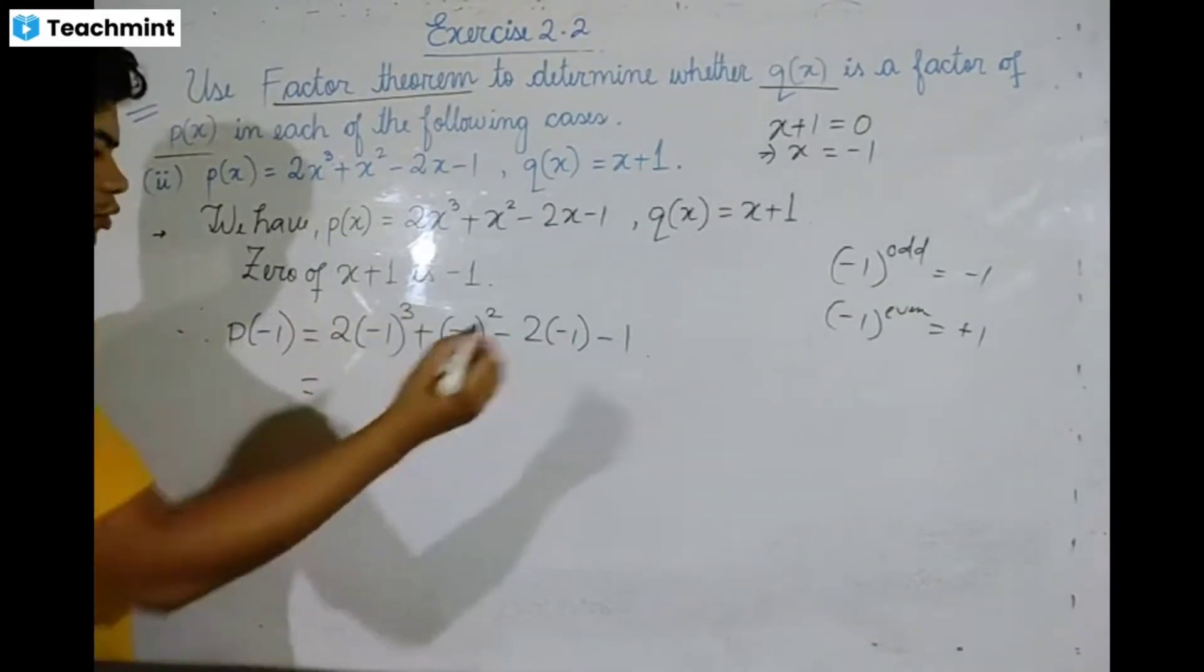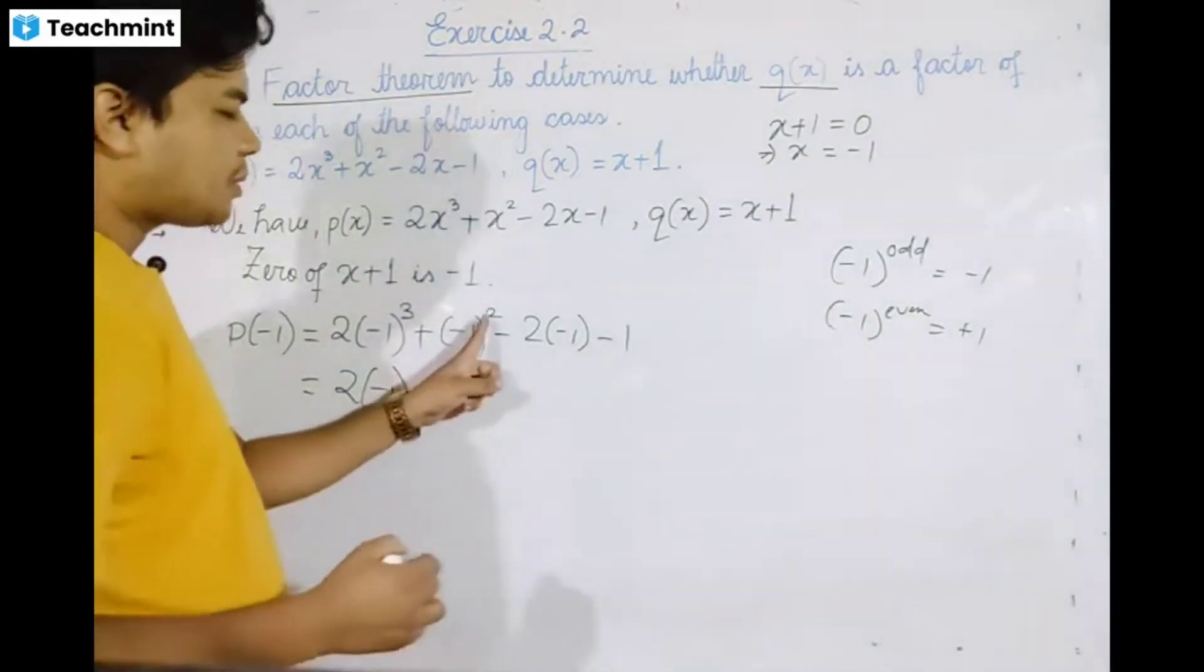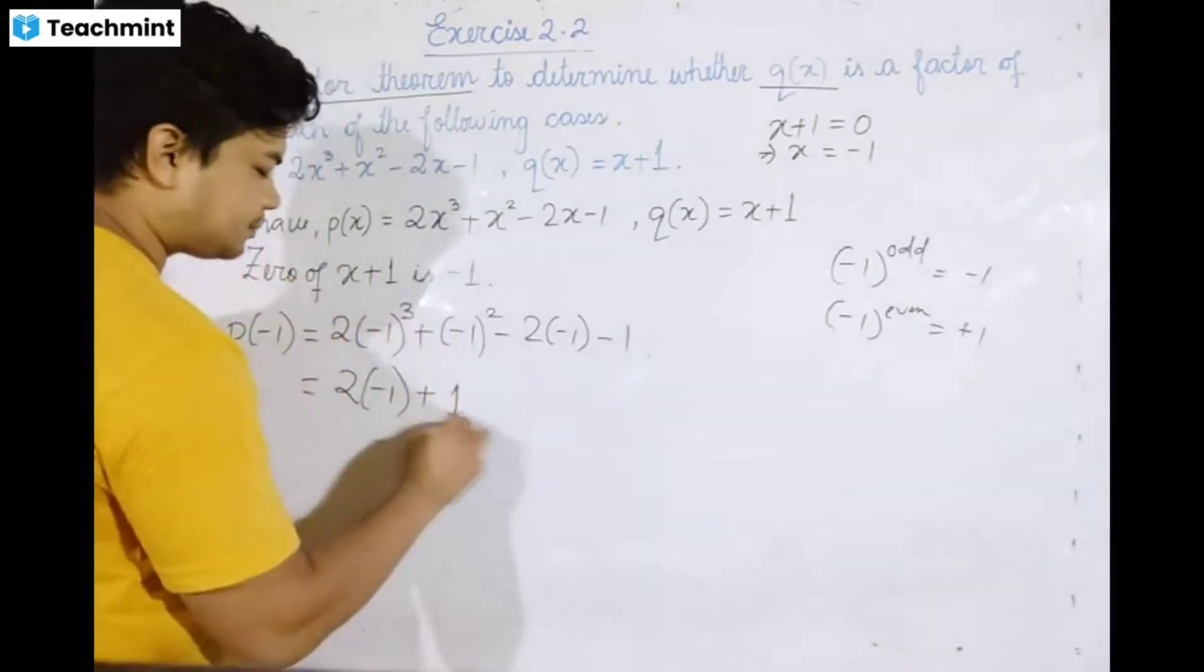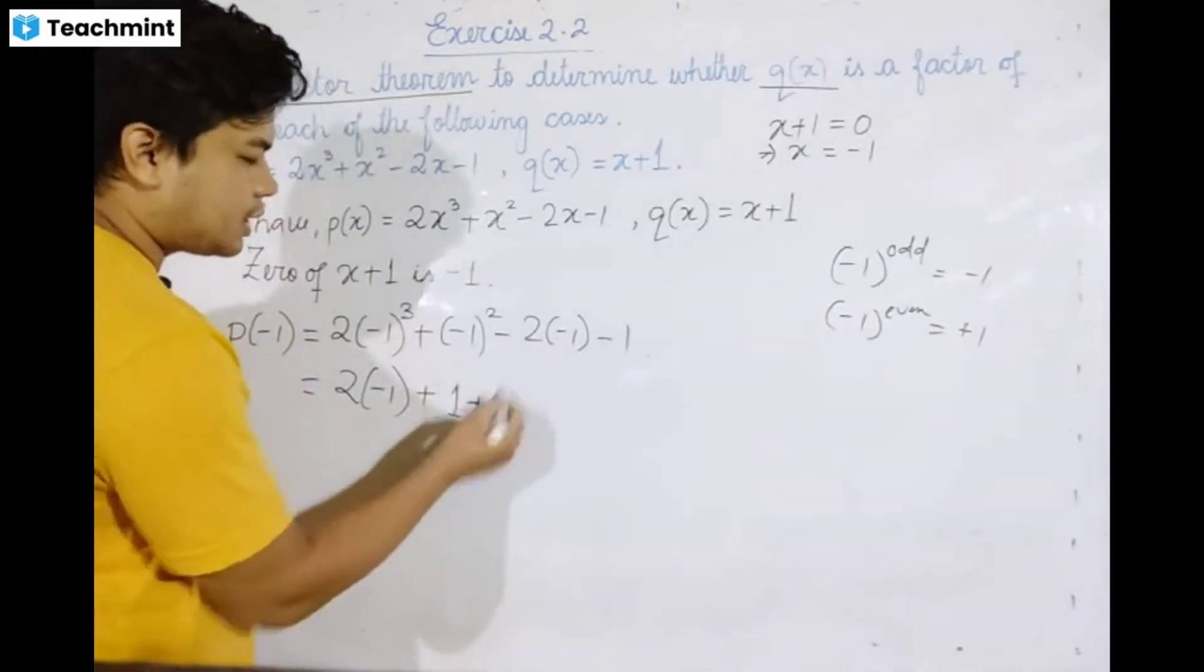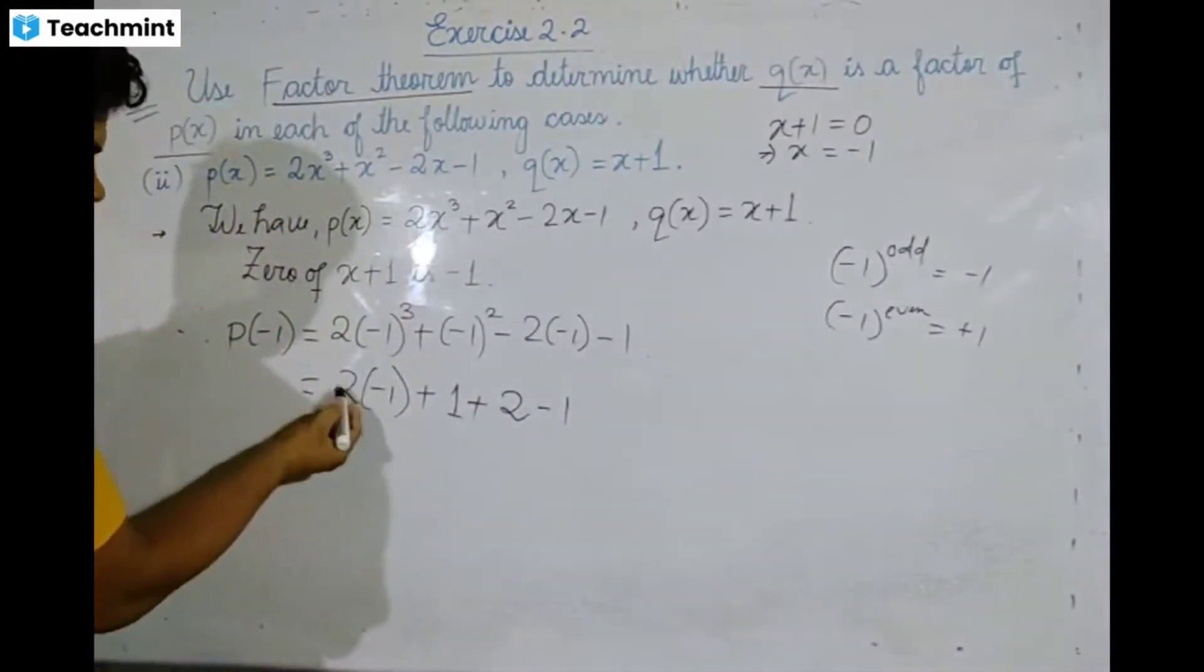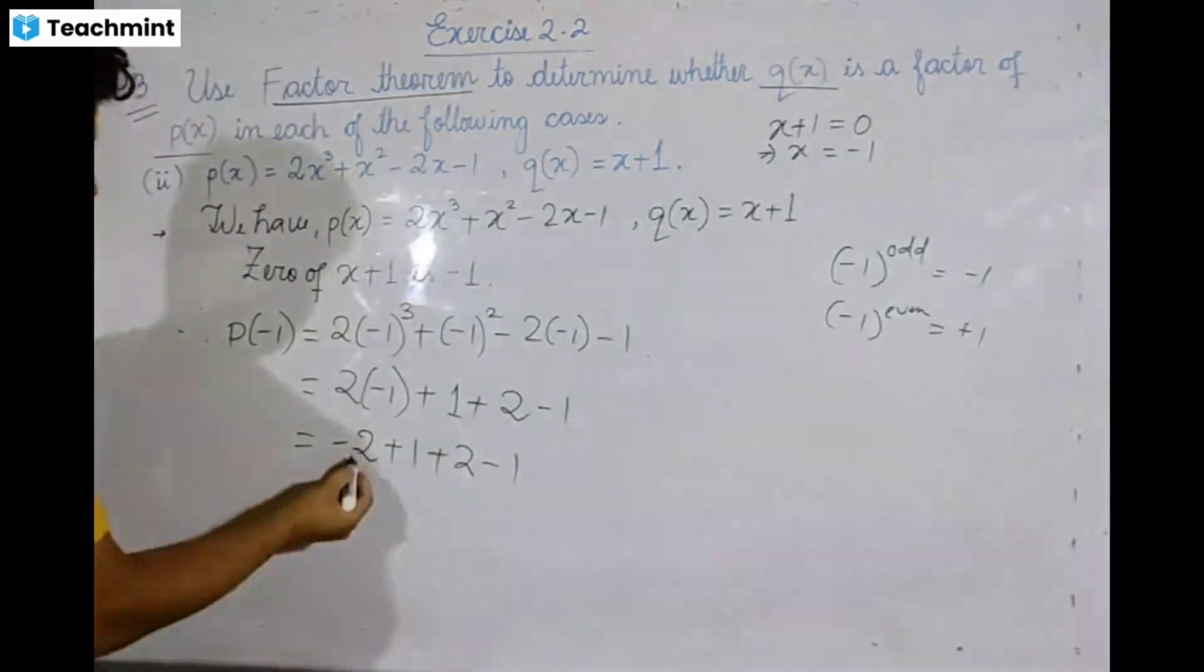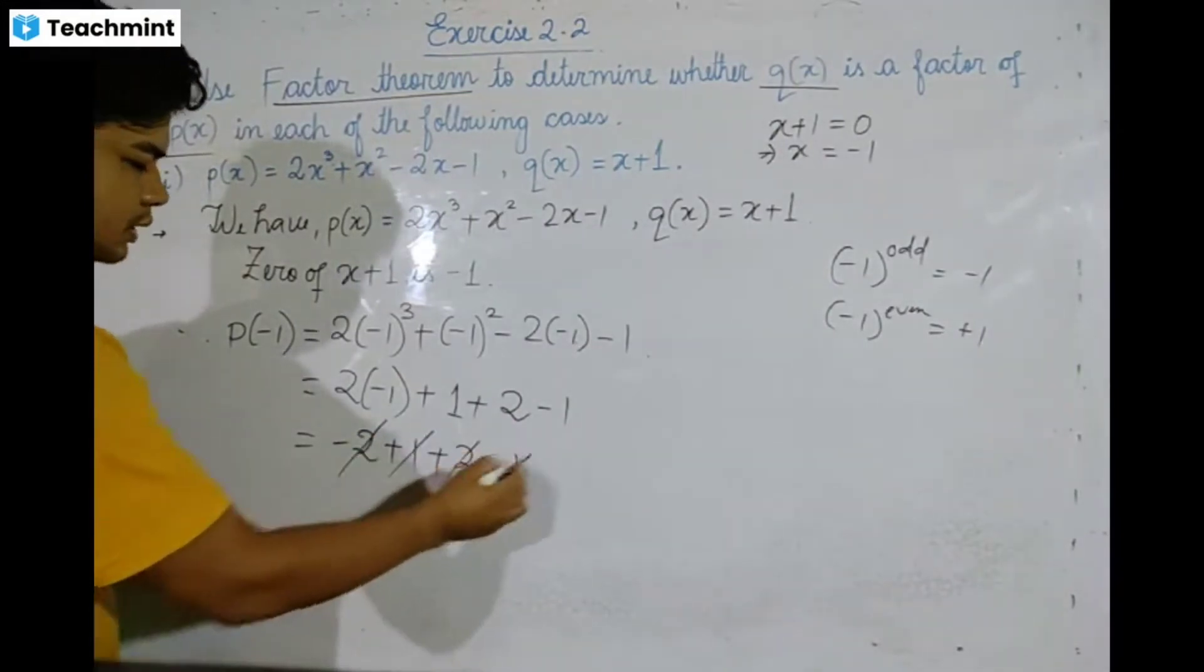Working through: -2 + 1 + 2 - 1. This simplifies to -2 + 1 + 2 - 1, which equals 0.